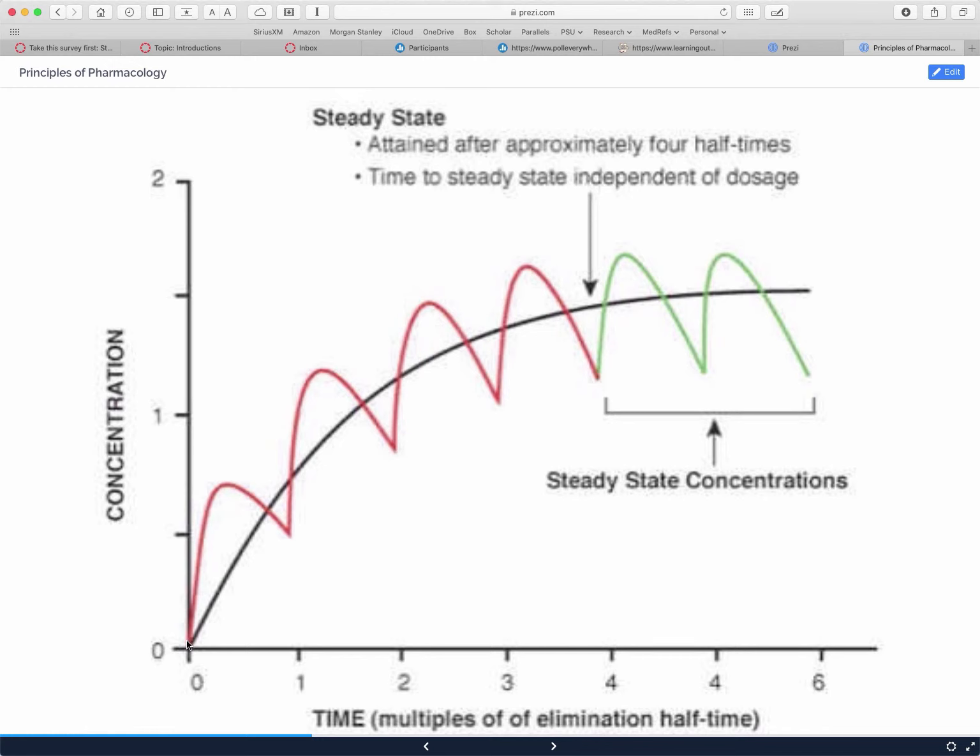As we do that, the mean concentration is increasing. After we get to four or five half-lives, we now are at steady state.